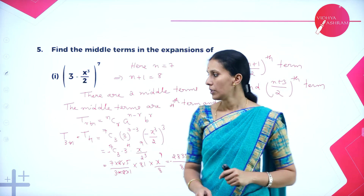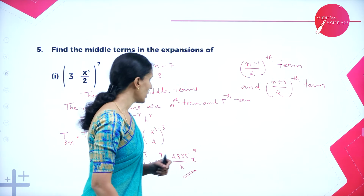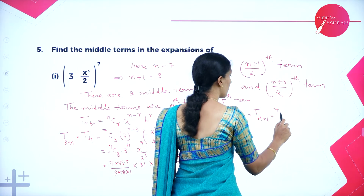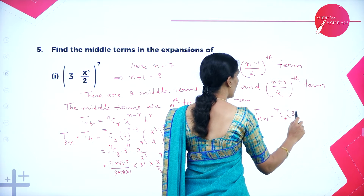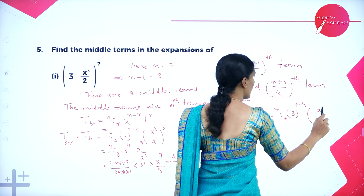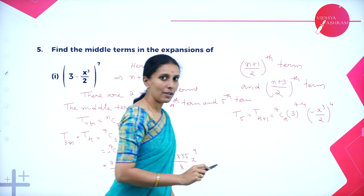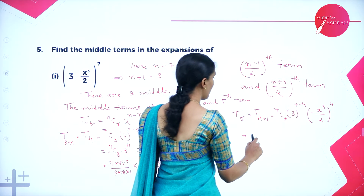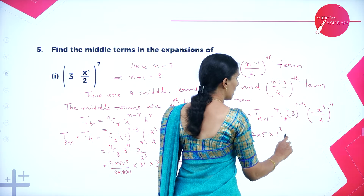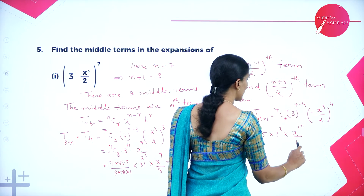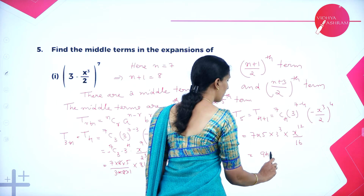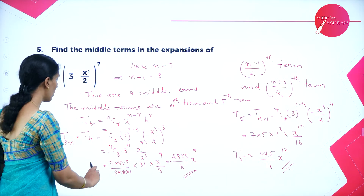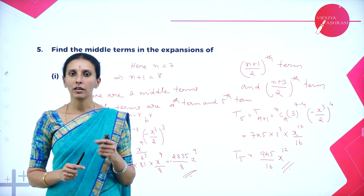For the fifth term: T5 = T(4+1) = 7C4 · 3^3 · (-x³/2)^4. Since 7C4 = 7C3 and (-x³/2)^4 is positive, this gives 7·5 · 3^3 · x^12/16 = 945/16 · x^12. Therefore T4 and T5 are the two middle terms of the given expansion.